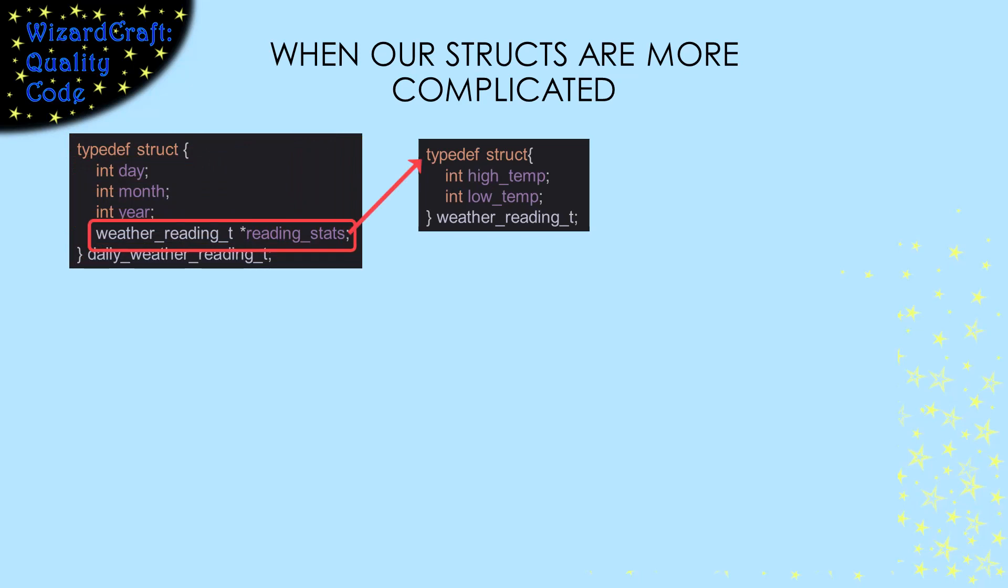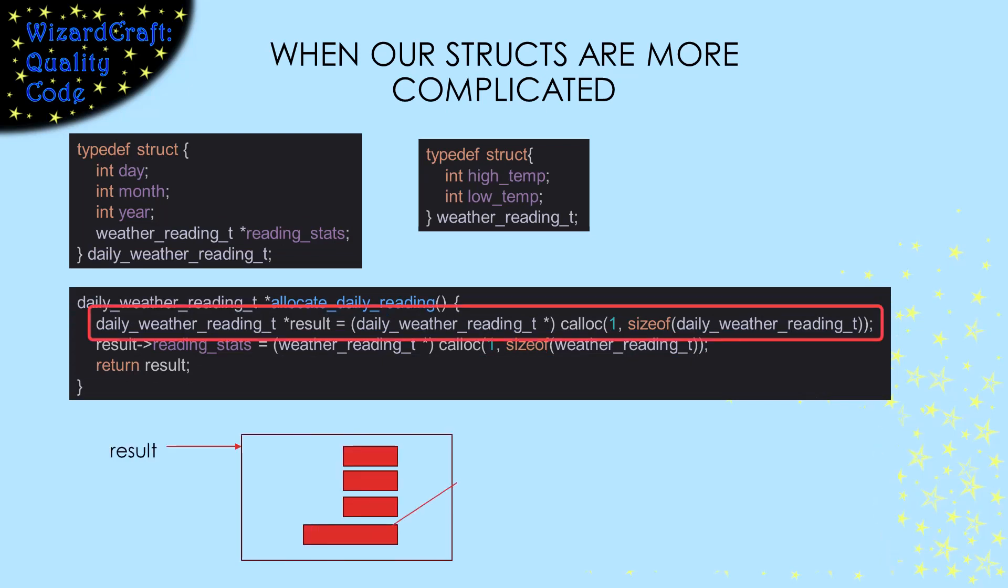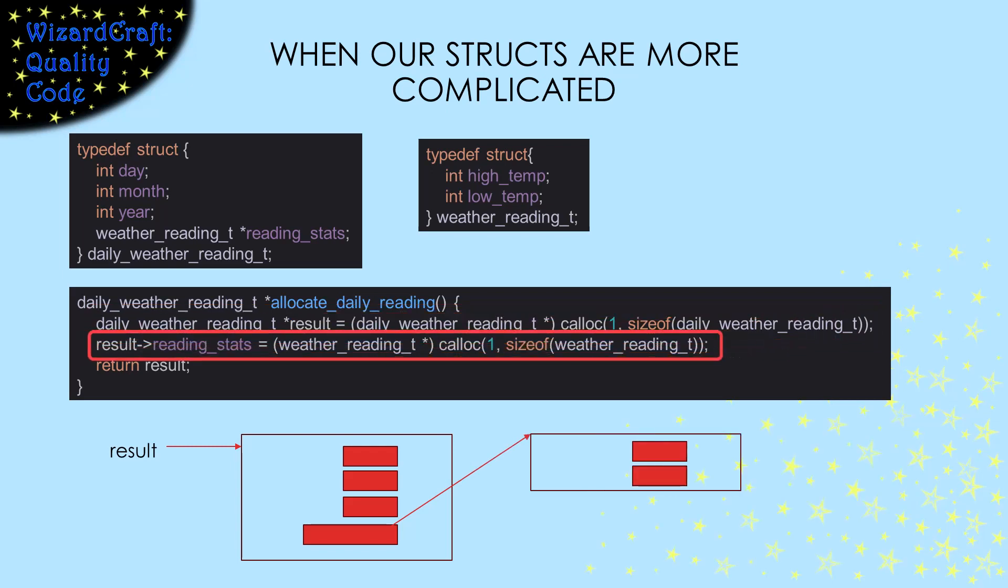We've talked about how we should have a function to allocate and initialize a struct. In this case, it contains two callocs: one for the daily weather reading struct and one for the struct that contains that day's data. When that's finished,